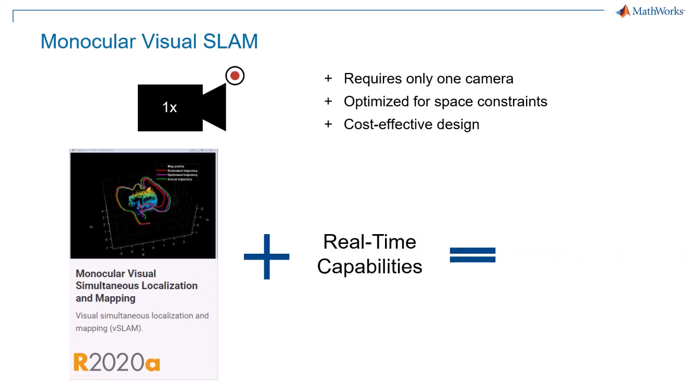In R2024A, the Computer Vision Toolbox introduced a new class designed specifically for running monocular vision workflows in real-time. This class, called the MonoVSLAM class, is designed to streamline your visual SLAM development and deployment with efficiency and ease.